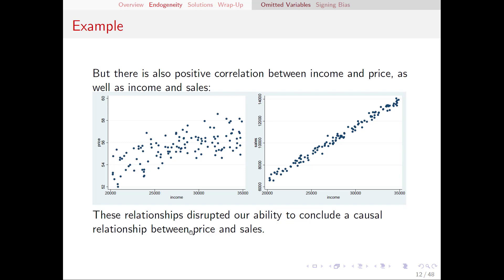Since the higher prices also tended to have high incomes, it looked like higher prices caused higher sales. But that was actually not the case — it was because of the income hiding out in the background that made it look like that, thereby disrupting our ability to estimate a causal relationship between price and sales. But once we included income in the equation, we're able to hold it constant and estimate that relationship we're after.